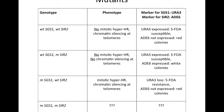When URA3 is expressed, yeast are sensitive to 5-FOA. When ADE6 is expressed, the yeast colonies are white. When ADE6 is not expressed, the yeast colonies are red. There may be some variegation in the colonies as well.